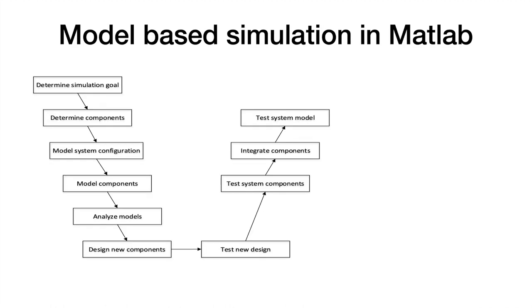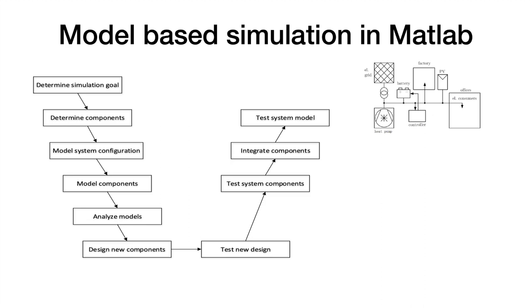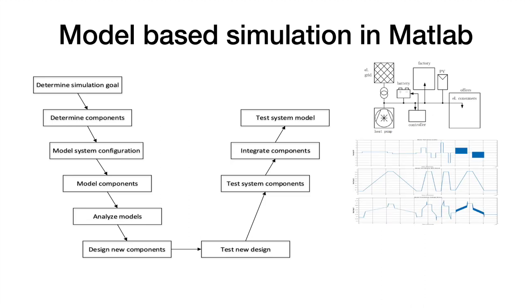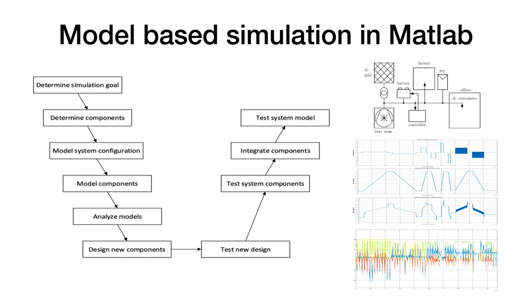To use the components, we follow the workflow for model-based simulation in Simulink. First, we determine the simulation goal and identify the components. After modeling the system configuration and each component, we analyze the model and decide if new components or design changes are required. Next, we test each component separately and then integrate them and test the whole system.